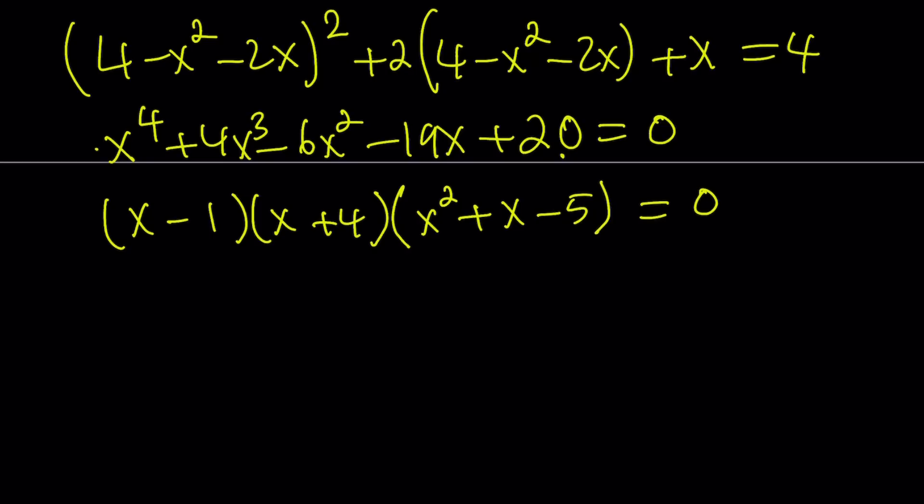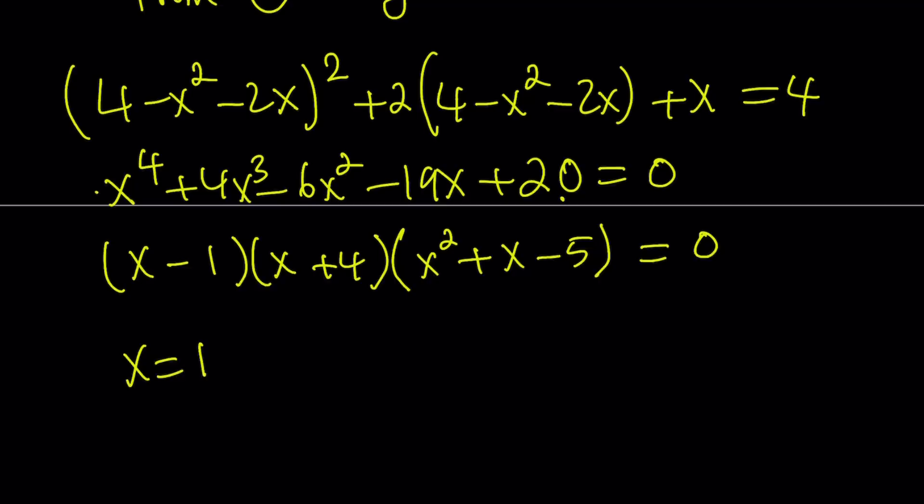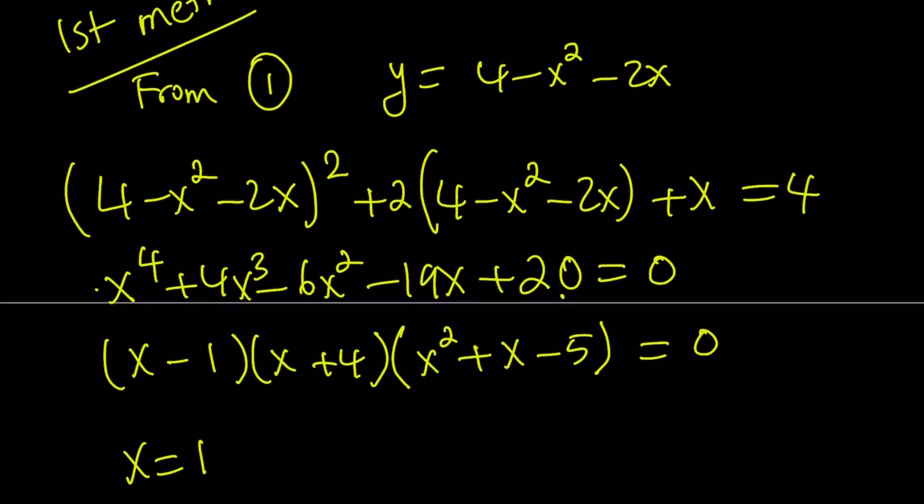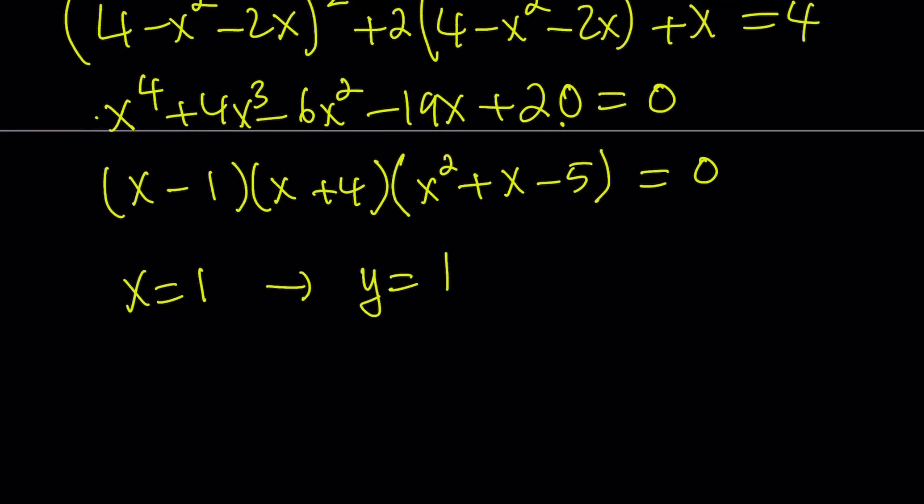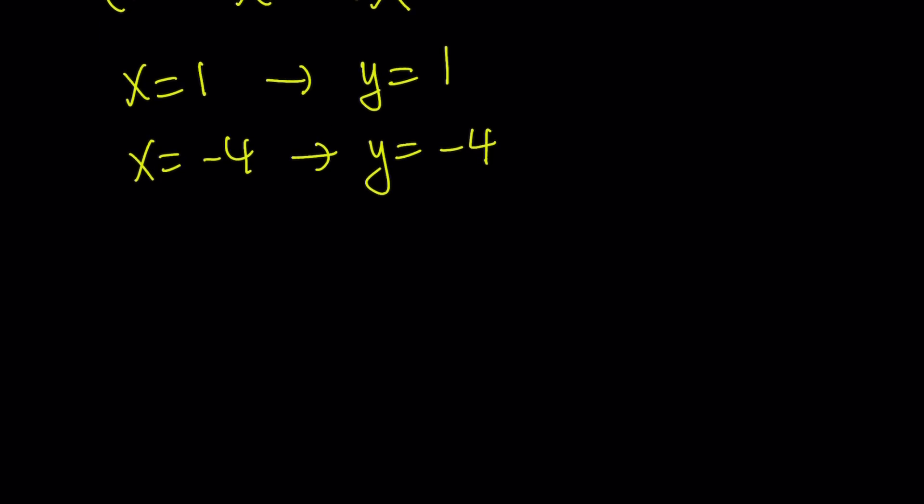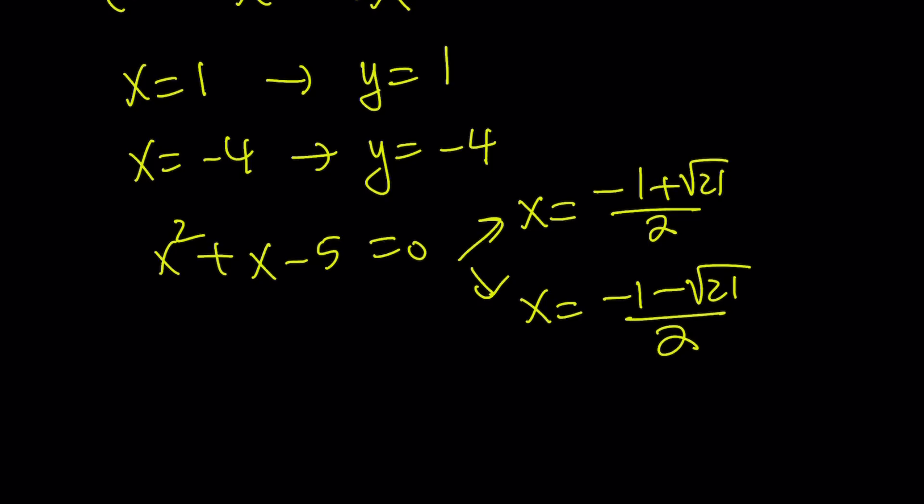From here, we get x equals 1. Now, remember, we used a formula from the first equation. We wrote y in terms of x, so if x is equal to 1, I can plug it in and find the y value, and y becomes 1 as well. How about x equals negative 4? If you substitute it, you'll notice that y is also negative 4. So that gives us the equal values, but what about the quadratic? x squared plus x minus 5 equals 0 is going to give me the following roots: x equals negative 1 plus square root of 21 over 2, and x equals negative 1 minus square root of 21 over 2.